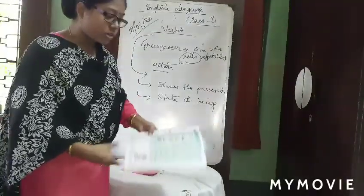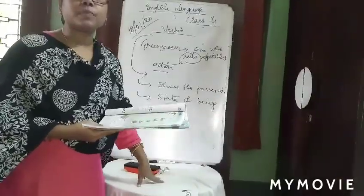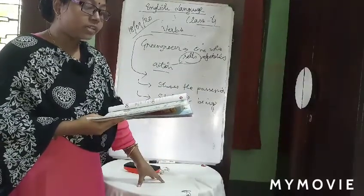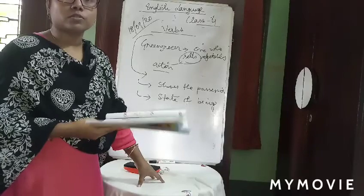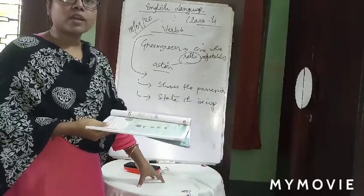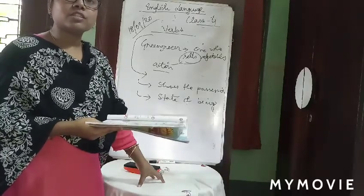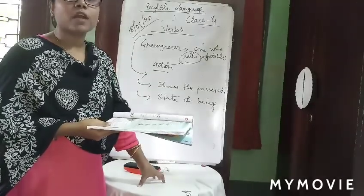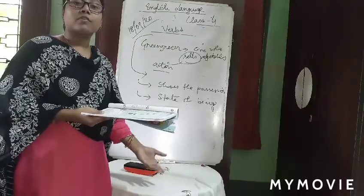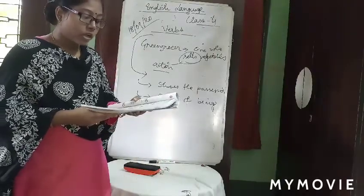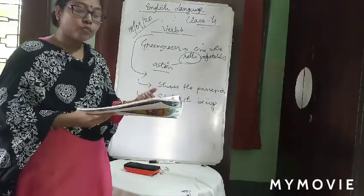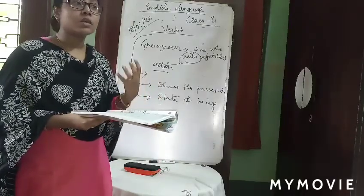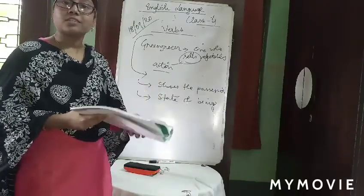Second point — artist: one who paints pictures. Third — tailor: one who stitches clothes. Tailor is known as one who is actually stitching the clothes. Florist means one who sells flowers — those who sell flowers are known as florist. Grocer: one who sells grains. Grains means rice, flour, wheat — all these things.